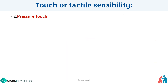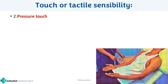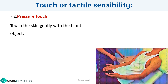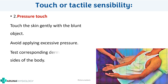Next we move on to pressure touch. For pressure touch you can use any blunt object — usually a pin or the other side of a pin or any blunt surface. Touch the skin gently with the blunt object and avoid applying excessive pressure. Again, test the corresponding dermatomes on both sides.